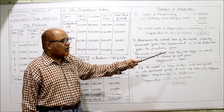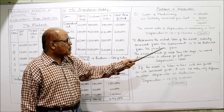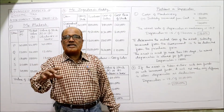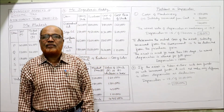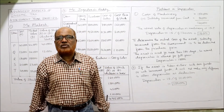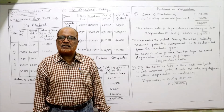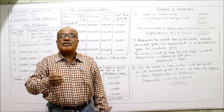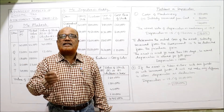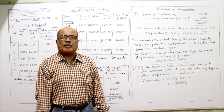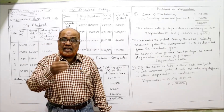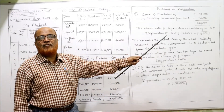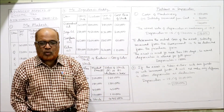The asset is used for more than 180 days, so normal depreciation is allowed for the full year. If an asset is used for less than 180 days, only 50% of normal depreciation would be calculated. Here, since it is used for more than 180 days, full year depreciation is provided.